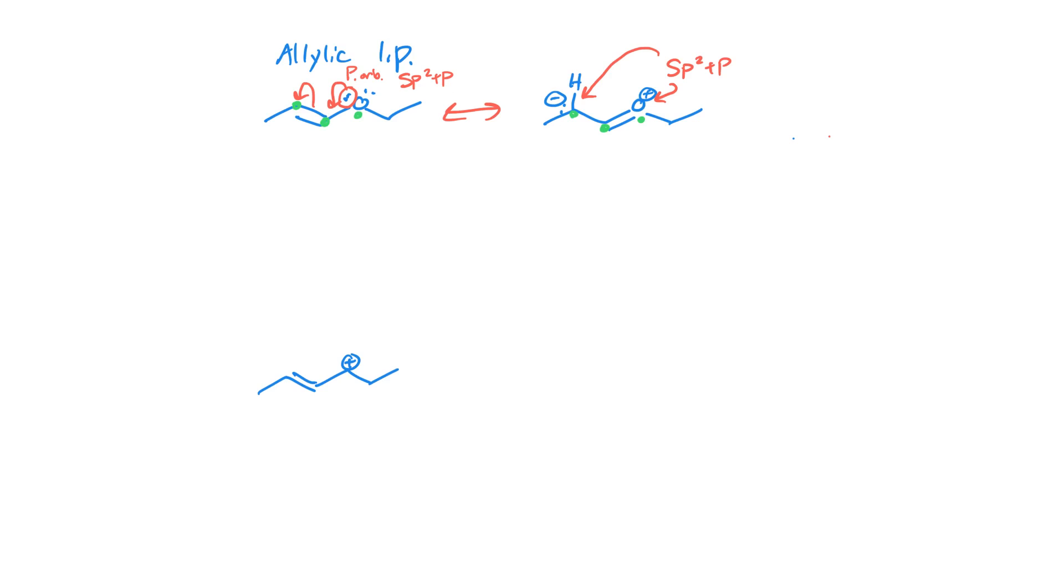If there's a lone pair or an empty orbital that can participate in resonance, that will be in a p orbital. You must have lone pairs and pi bonds in p orbitals in order to do resonance. Let's look at this cation down here, what resonance pattern do you recognize here?